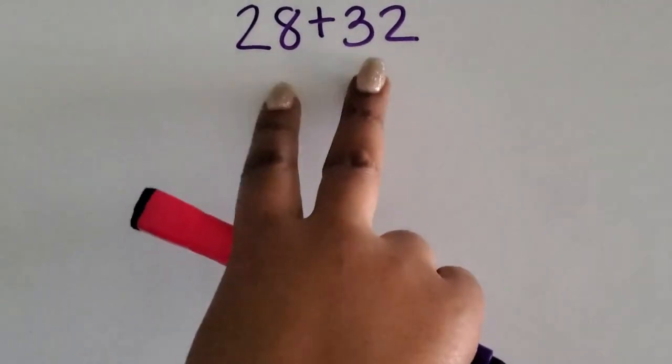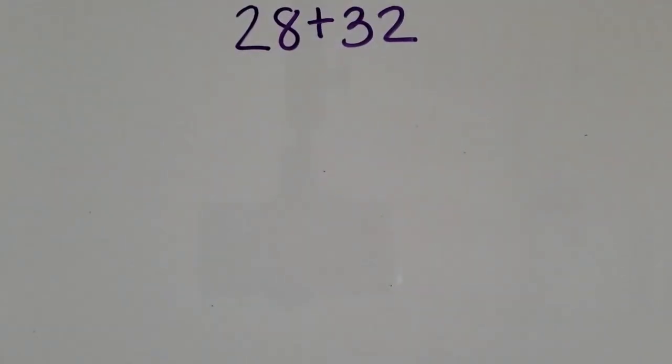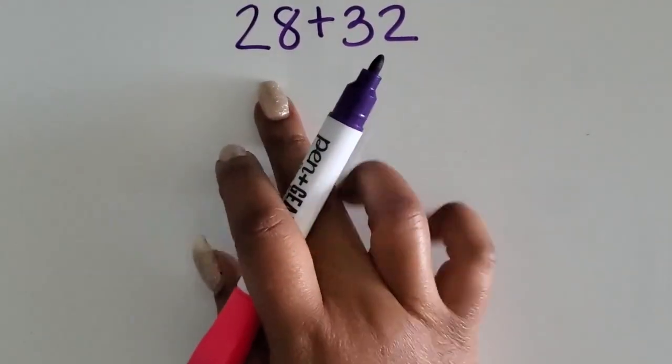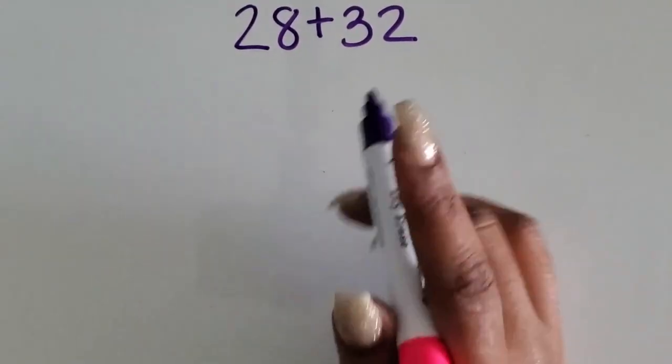We are going to be adding two two-digit numbers using the expanded form for addition. Expanded form is where you're showing the value of each digit based on its place value.